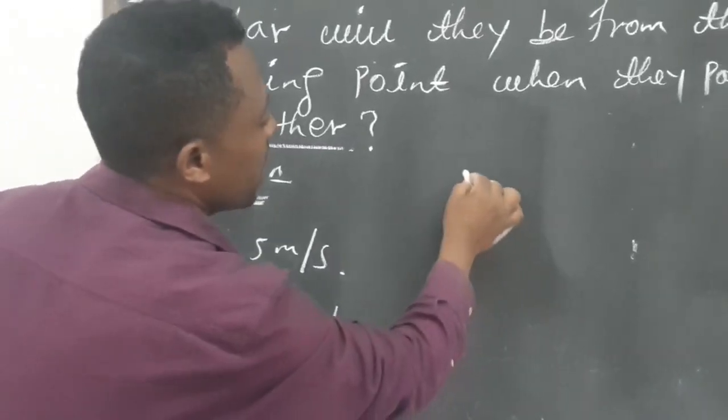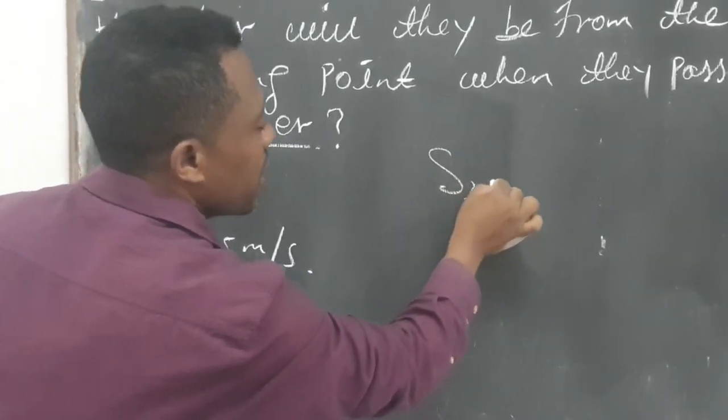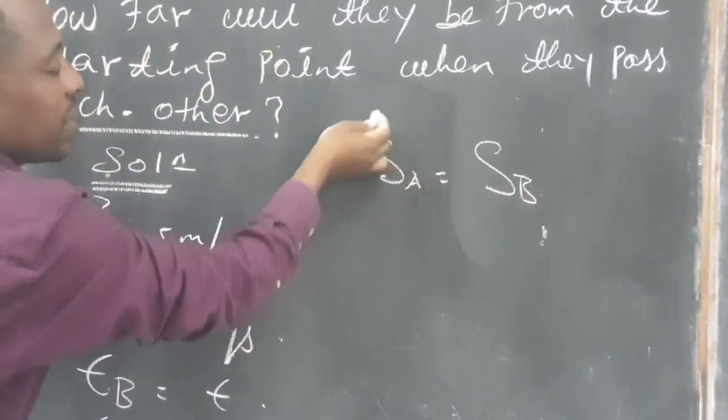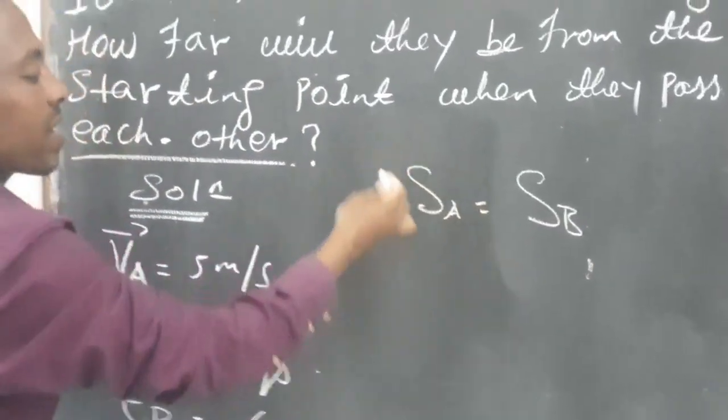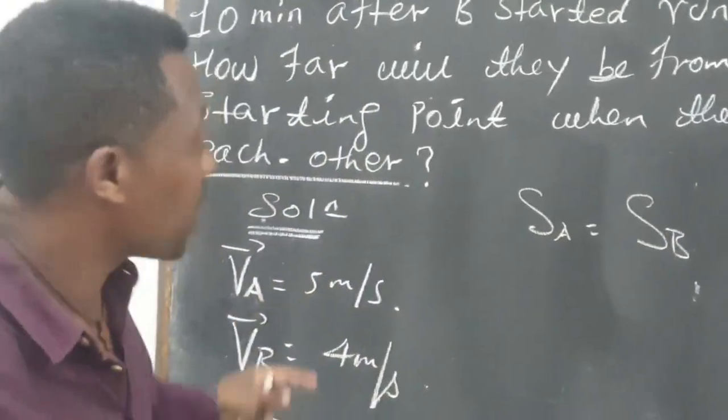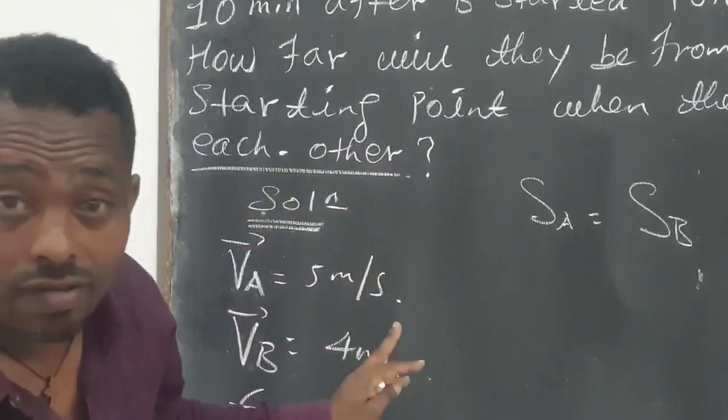S of A and then S of B. That means the distance covered by runner A and the distance covered by runner B should be equal. Already this is given, okay?